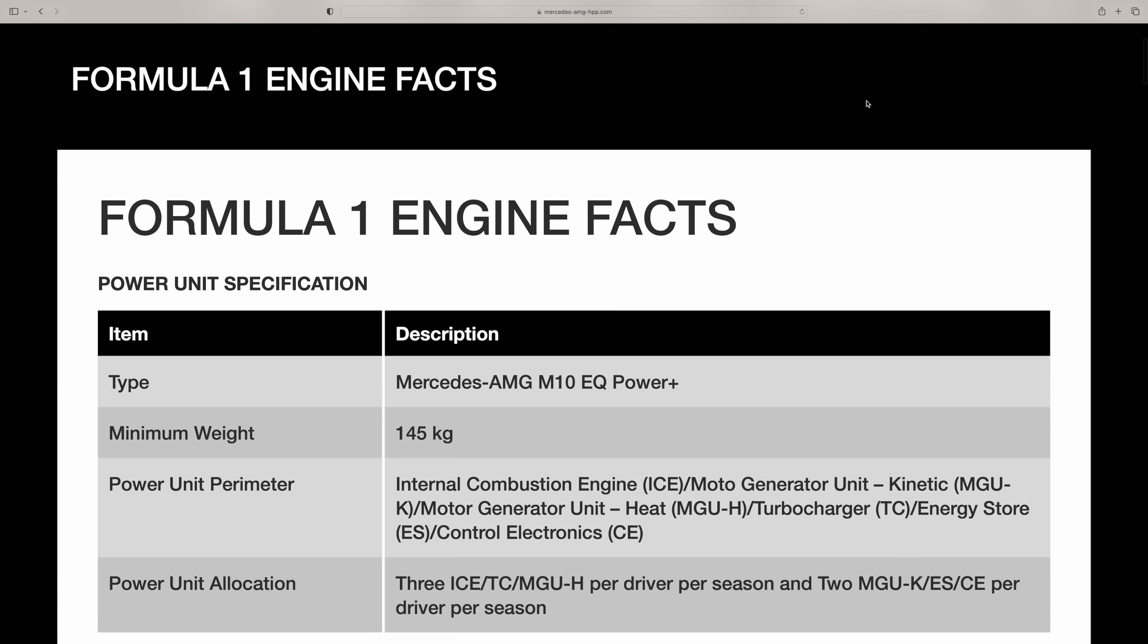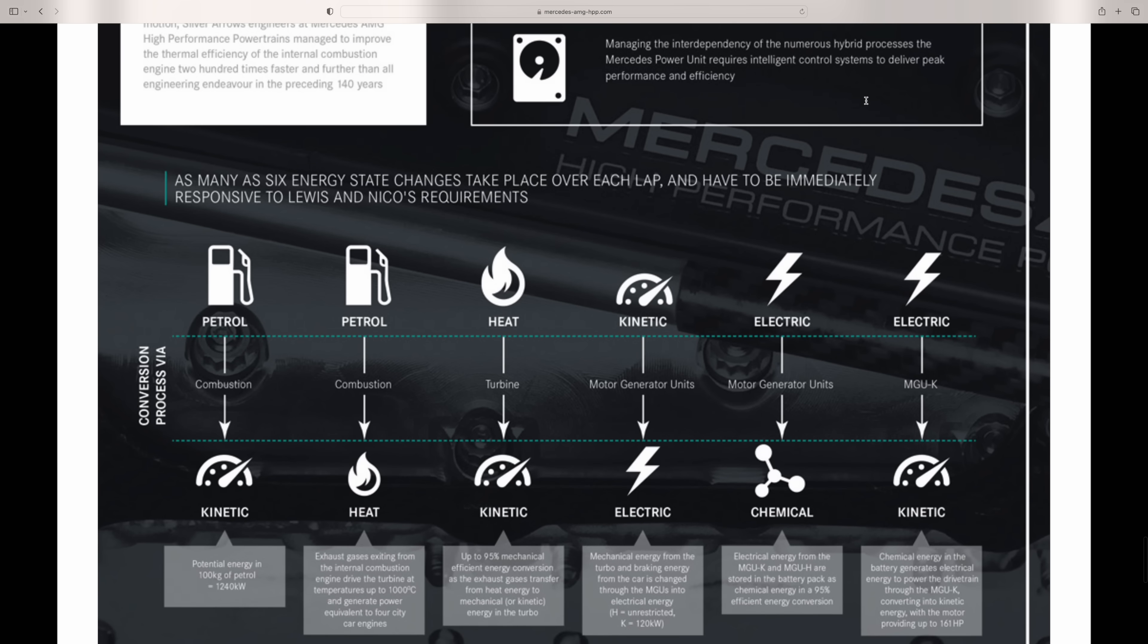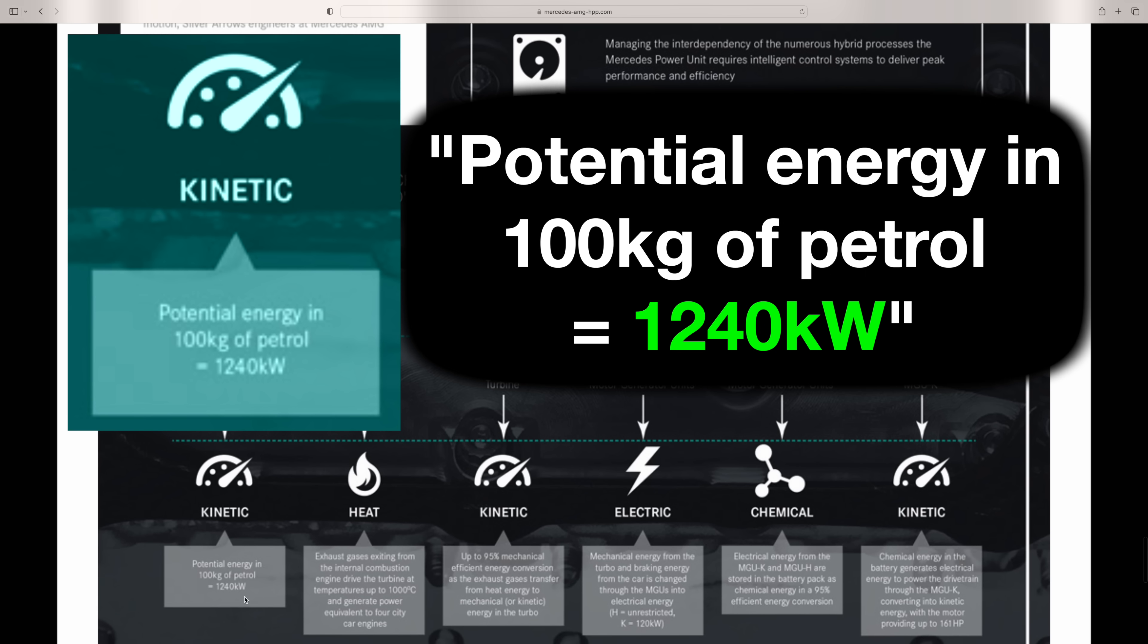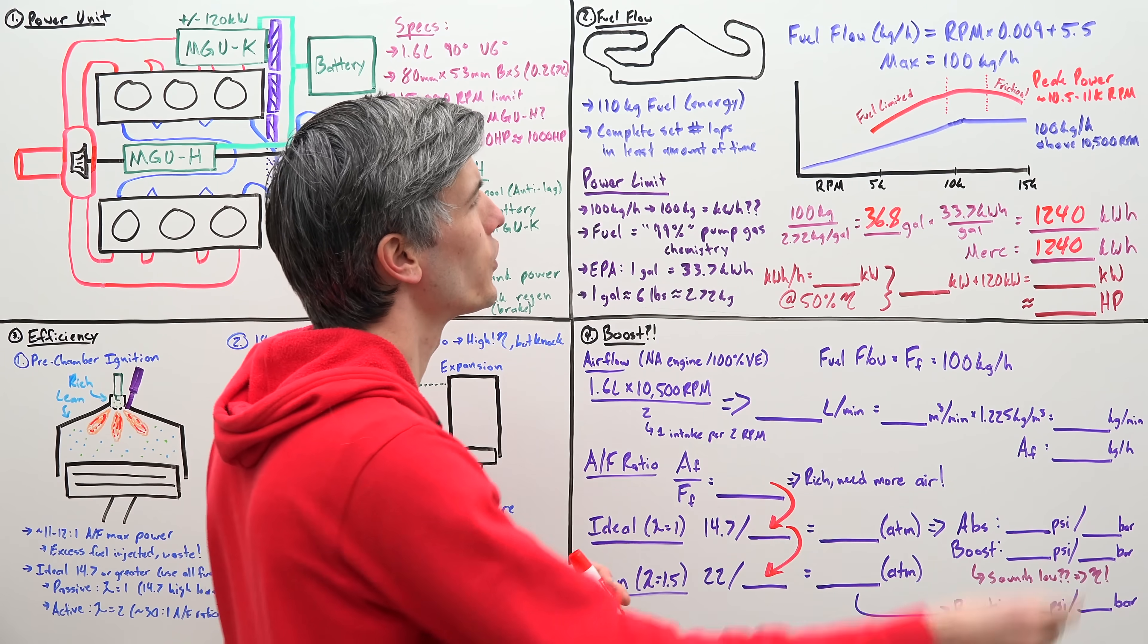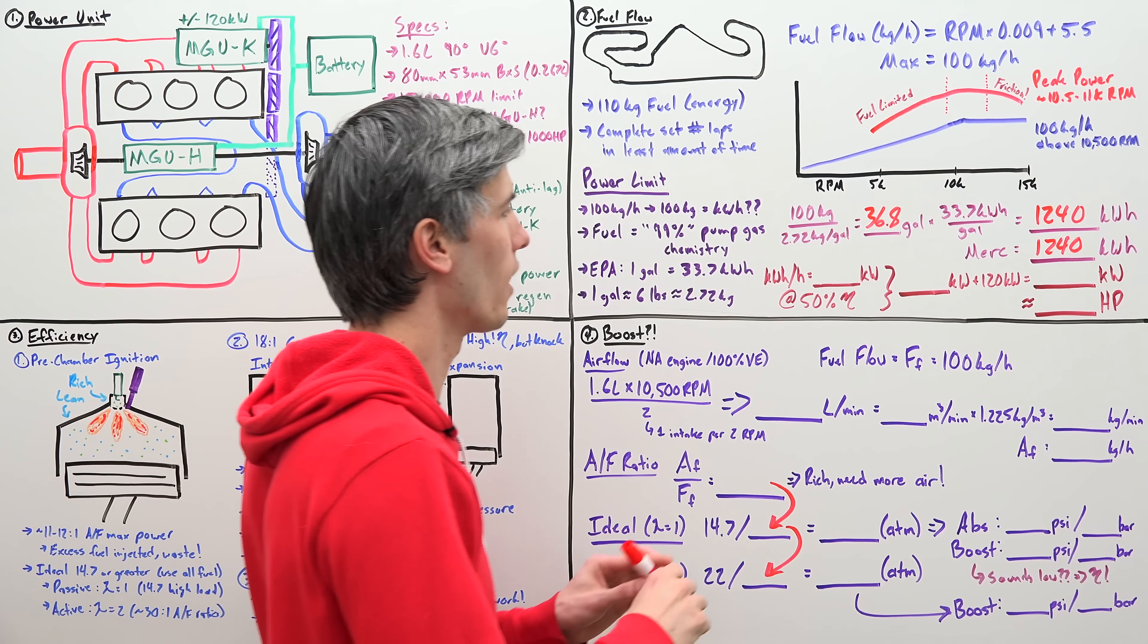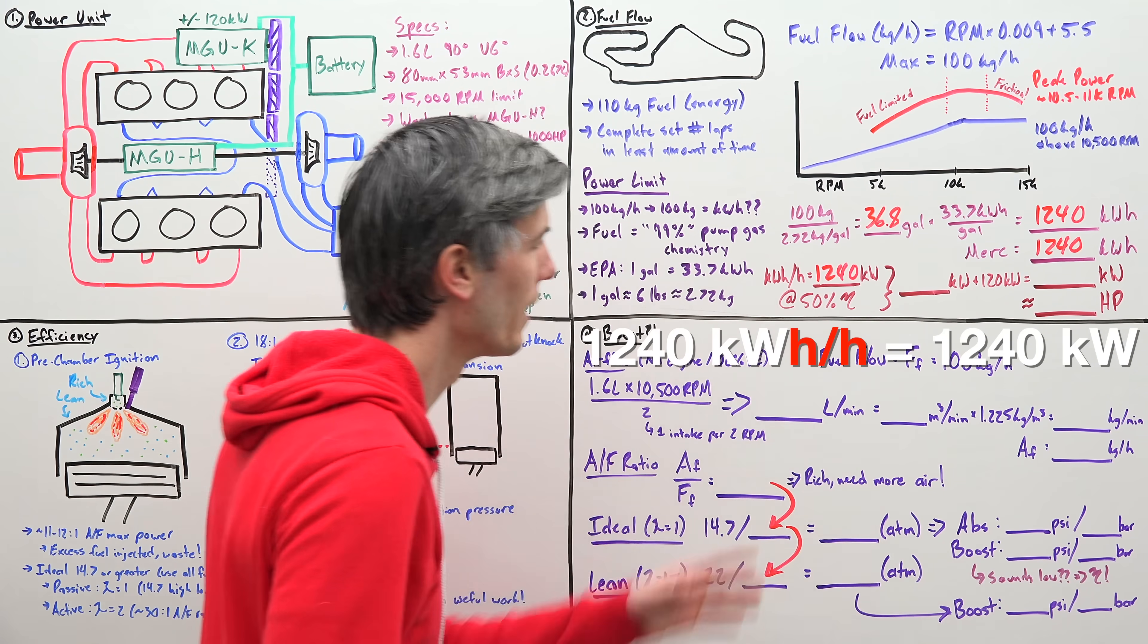And if we use our EPA conversion rate, we multiply that by 33.7 kilowatt hours. That means the total energy we have within 100 kilograms of gasoline is 1,240 kilowatt hours. Now, that's just some napkin math. Why should you believe me? Well, I found a Mercedes document which states in 100 kilograms of fuel, the total energy content is 1,240 kilowatt hours. Now, they actually state kilowatts, which is a unit of power, not energy. But again, keep in mind, this is a mid-pack team. Let's cut them a little slack. I'm kidding. Chill out.